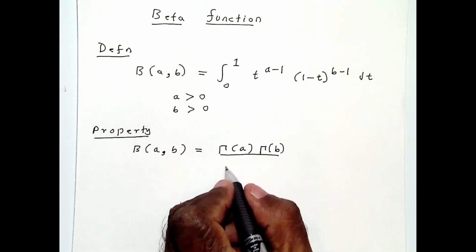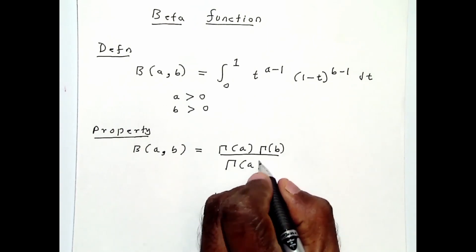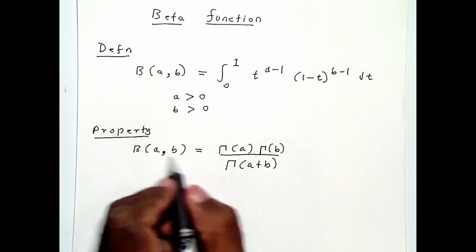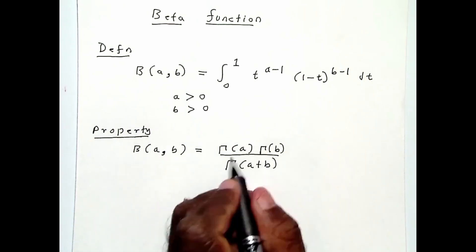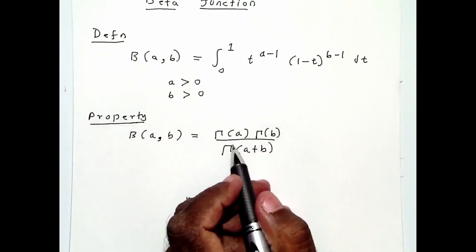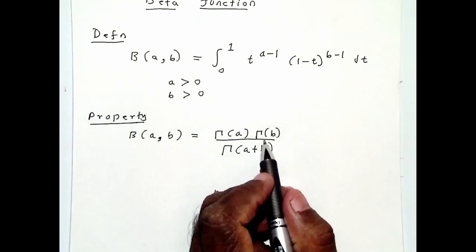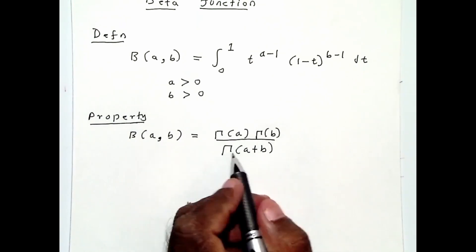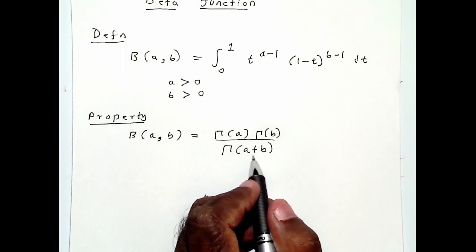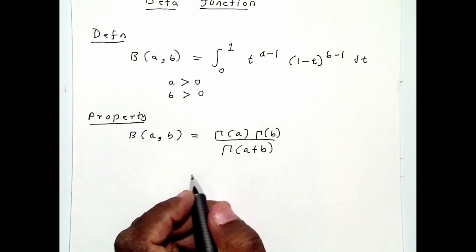This is the relationship between the beta function and the gamma function: B(a,b) = Γ(a)Γ(b)/Γ(a+b).